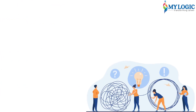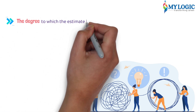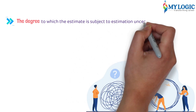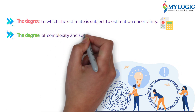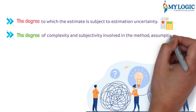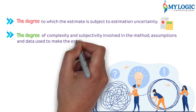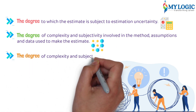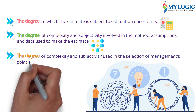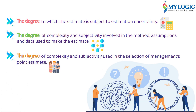When assessing inherent risk, the auditor should consider: the degree to which the estimate is subject to estimation uncertainty; the degree of complexity and subjectivity involved in the method, assumptions and data used to make the estimate; and the degree of complexity and subjectivity used in the selection of management's point estimate.